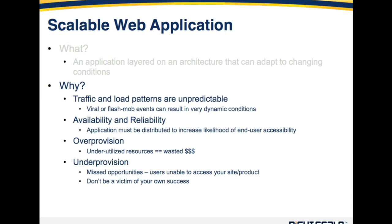Availability and reliability — you want your application to be distributed such that your end users can get to it when they want to. In the traditional hardware model, there are two main ways of handling this: over-provision and under-provision. Over-provisioning is where you threw enough resources at it to handle that viral or flash mob event case, but in the normal steady-state environment you had a lot of underutilized resources and therefore a lot of wasted dollars. Under-provisioning is where you had just enough infrastructure to handle the normal case, but if a viral or flash mob event occurred, users would typically have a poor end-user experience and were not able to access your site, resulting in lost revenue opportunities.